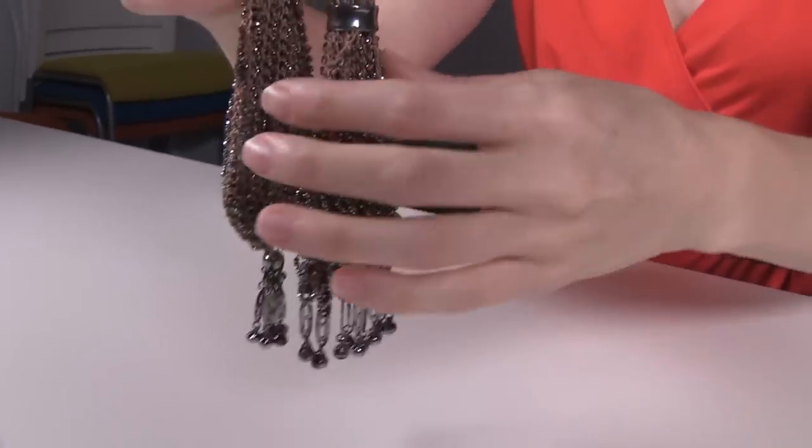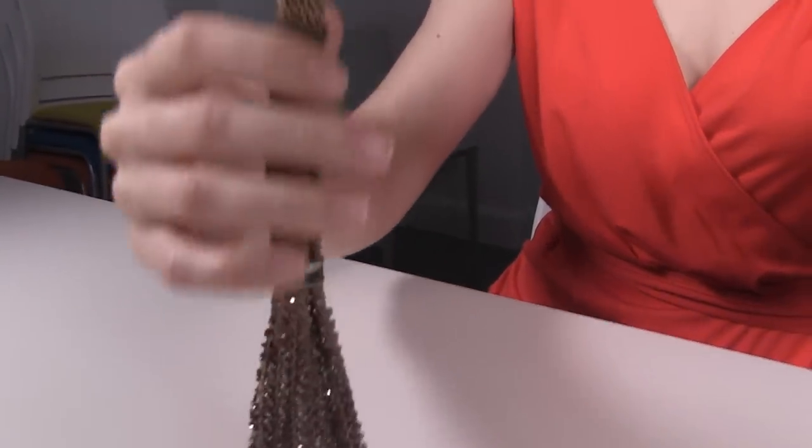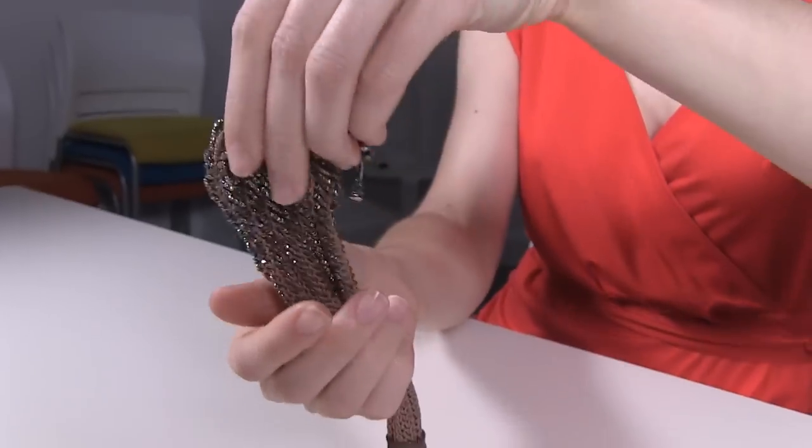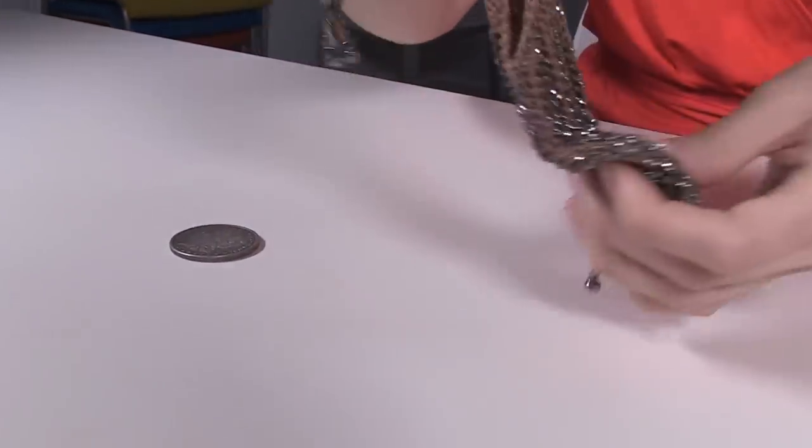It has two different styled ends, one square and one rounded. And this would have been done to distinguish between the types of coins the purse contained, these being silver coins or gold coins.